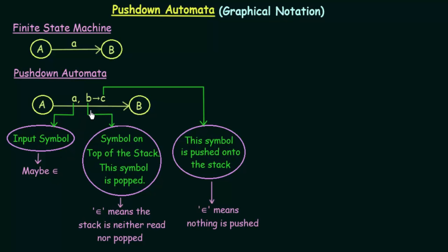The second symbol B represents the symbol on top of the stack, and this symbol is always popped — meaning it is removed from the stack. So B is the topmost symbol on the stack and it will be removed. This can also be epsilon, which means the stack is neither read nor popped — nothing is popped from the stack.